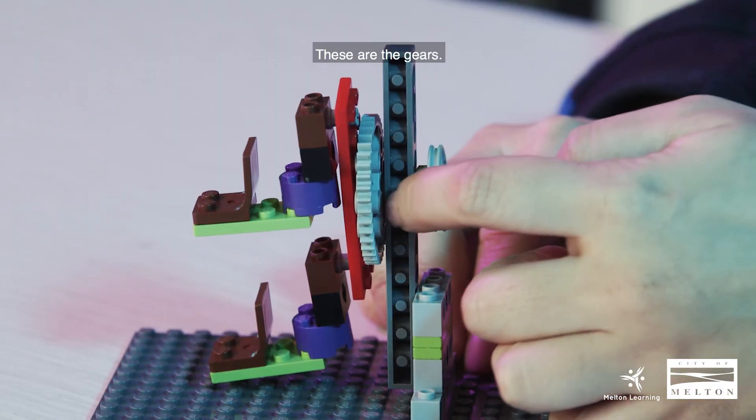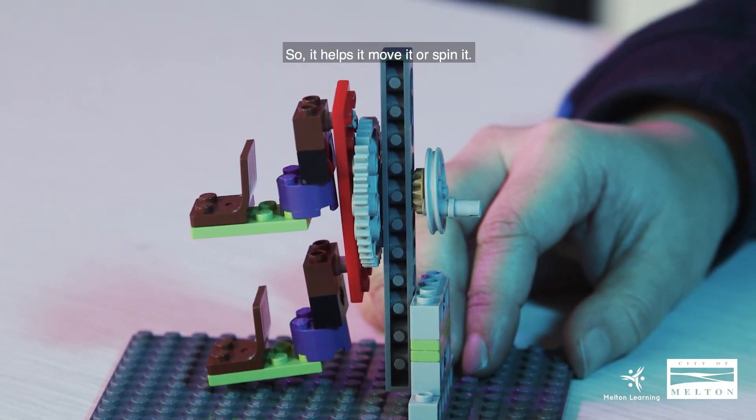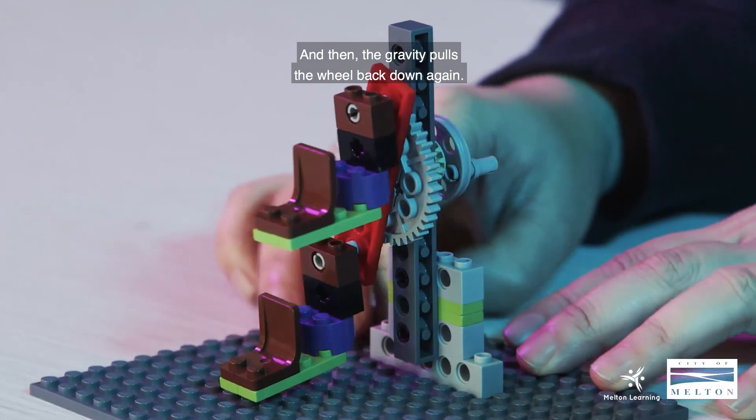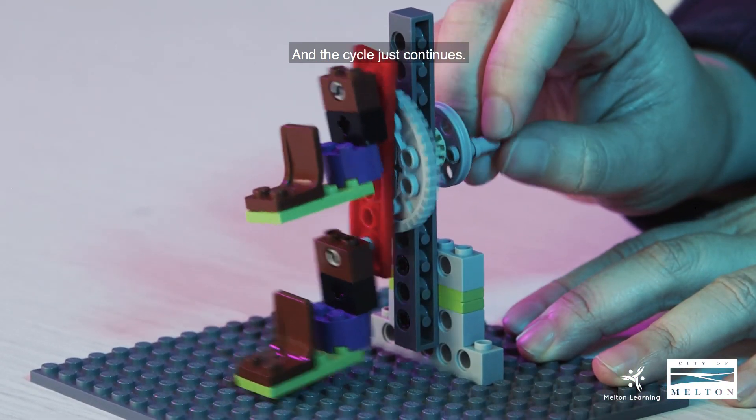Usually when the Ferris wheel spins upwards with the help of gears, right here, like so, these are the gears. So it helps it move it or spin it. And then the gravity pulls the wheel back down again and the cycle just continues.